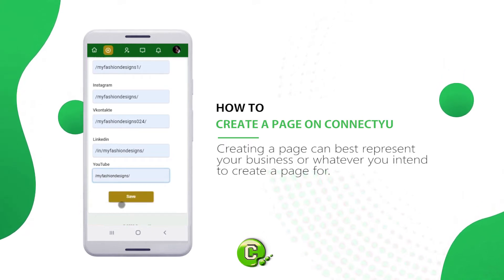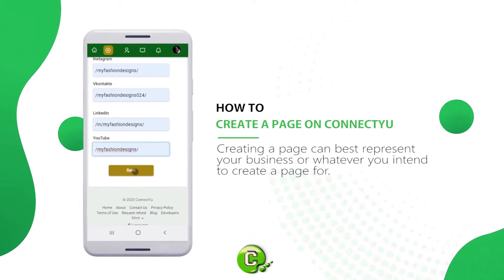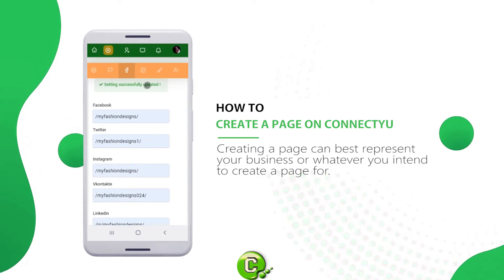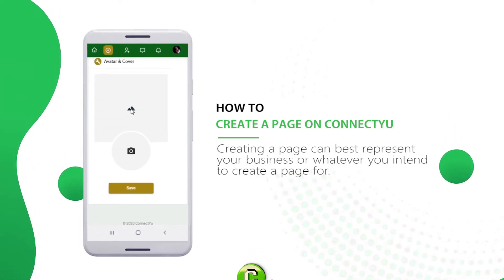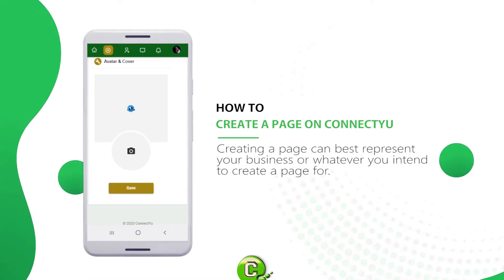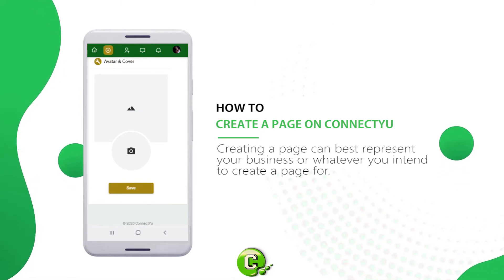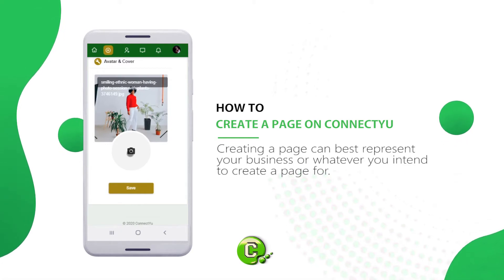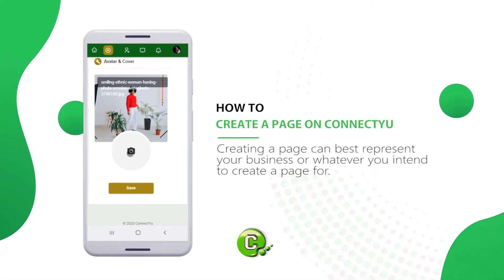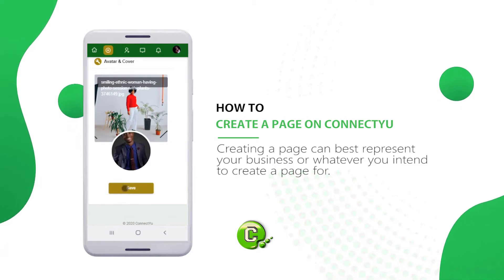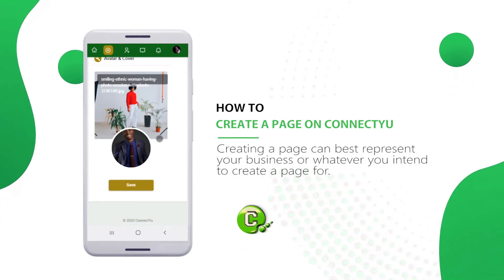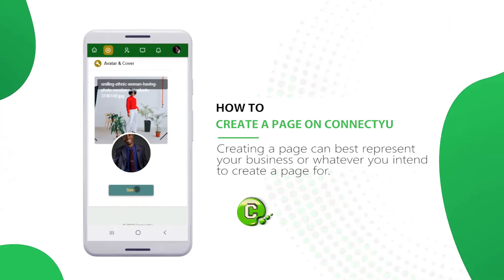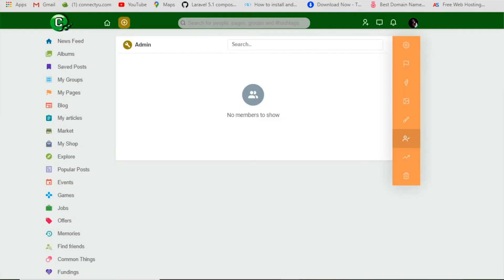Save and move to the next page by clicking on the picture icon on the top section of the screen. On this page, add the cover art of your page by clicking here and selecting the appropriate cover photo that best describes your page or business. Click here to select and upload your business or page avatar. This might be the business or organization logo, or any photo that best represents your business or page. Click on Save and proceed to the next page by clicking on the icon on the top section of your screen.